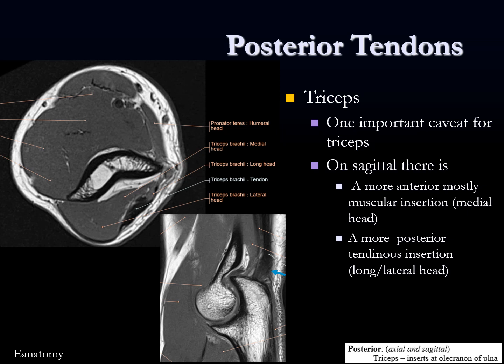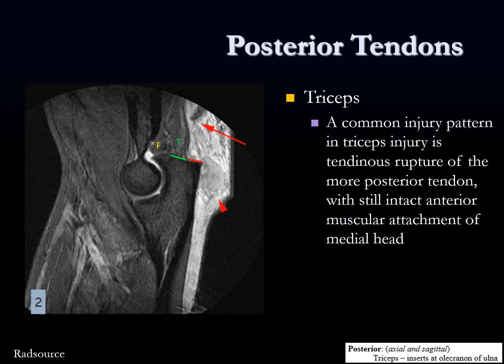On axial images, the medial head is a little more anteriorly and the more posterior tendinous attachment is the long and lateral head. One injury pattern is a tendinous rupture of the more posterior tendons — the long and lateral heads — with the intact anterior attachment of the medial head still present. Here's an example where the muscular attachment of the medial head was intact with a ruptured tendon involving the long and lateral heads.